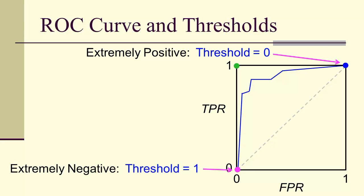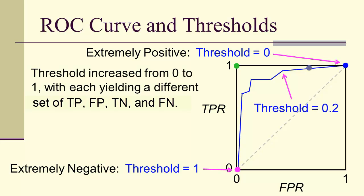Extremely negative is a threshold of 1. And we increase the threshold from 0 to 1, each yielding a different set of values.